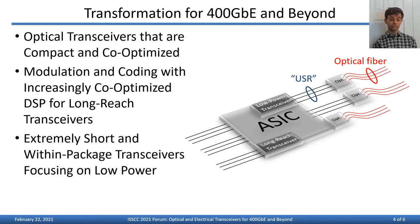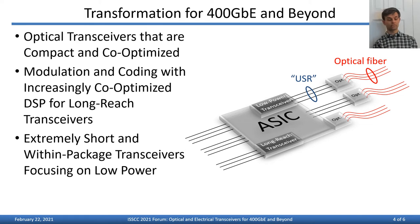This forum focuses on research that is transforming wireline links for 400 gigabit per second ethernet and beyond. To meet new demands, new paradigms are taking hold — every dB and every milliwatt counts. Compact optical transceivers are being co-optimized alongside neighboring circuitry. Modulation and coding are being reconsidered, with solutions co-optimized for performance and DSP implementation. In some transceivers, so much circuitry is focused on modulation and demodulation that it makes sense to start referring to them simply as modems. Other transceivers are being tailored to extremely short within-package links, where the focus is on density and low power.